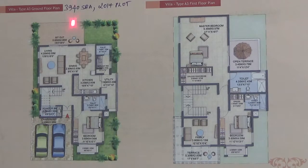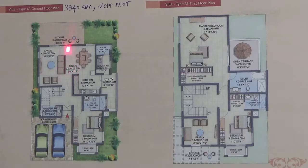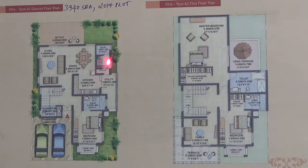You have living and dining here. The living and dining area will have access to the sit-out at the backyard. There is a kitchen with utility, and there is a servant room with an attached toilet.